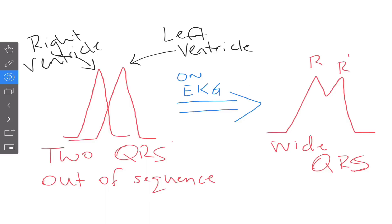With the right bundle branch block, we're going to see these rabbit ear type things. And the reason we see that is because what's actually happening is the right side of the heart is firing cell to cell versus the left side of the heart is firing through the conduction system like normal. And so you get these two spikes in the QRS because you have two ventricles firing at separate times.